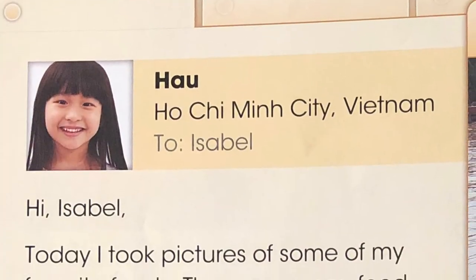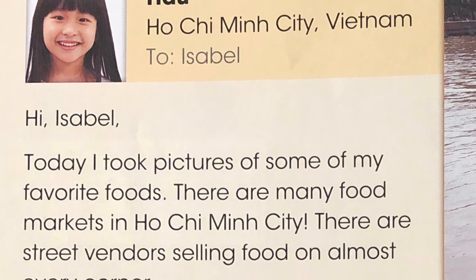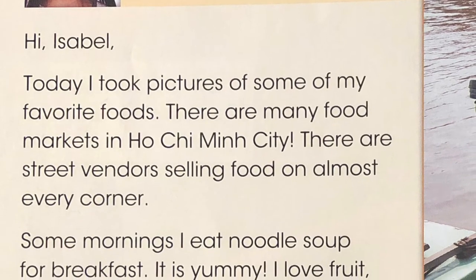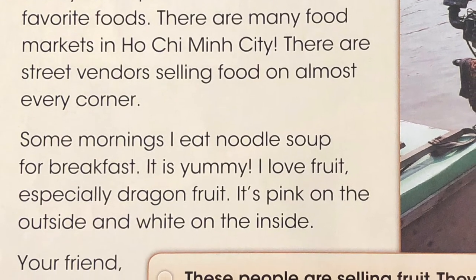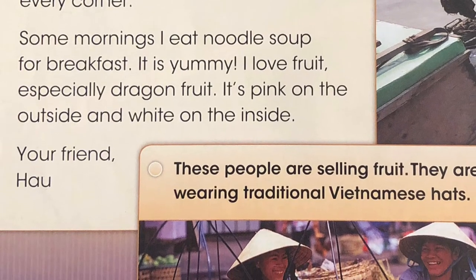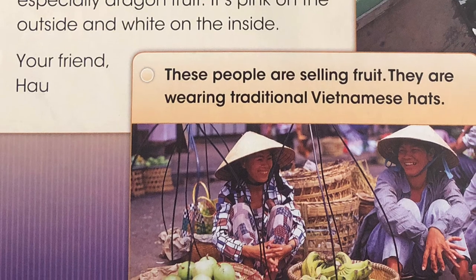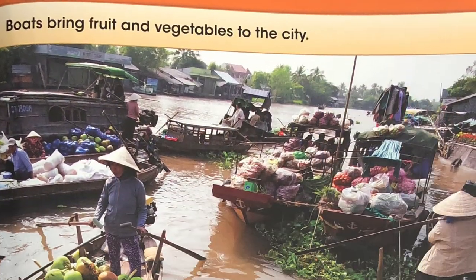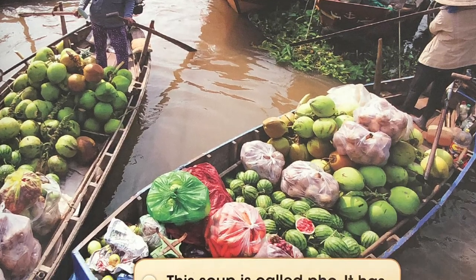Hao, Ho Chi Minh City, Vietnam. To Isabel. Hi, Isabel. Today, I took pictures of some of my favorite foods. There are many food markets in Ho Chi Minh City. There are street vendors selling food on almost every corner. Some mornings, I eat noodle soup for breakfast. It is yummy. I love fruit, especially dragon fruit. It's pink on the outside and white on the inside. Your friend, Hao. These people are selling fruit — they are wearing traditional Vietnamese hats. Boats bring fruit and vegetables to the city. This soup is called pho. It has noodles and vegetables.